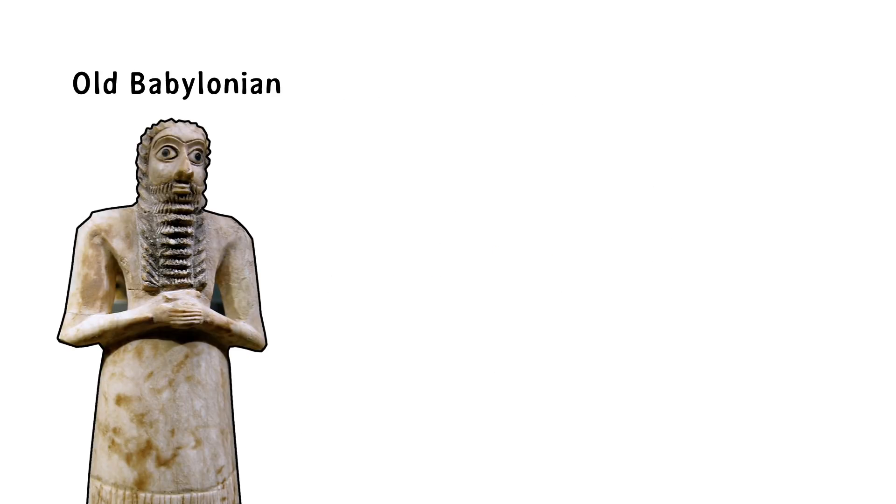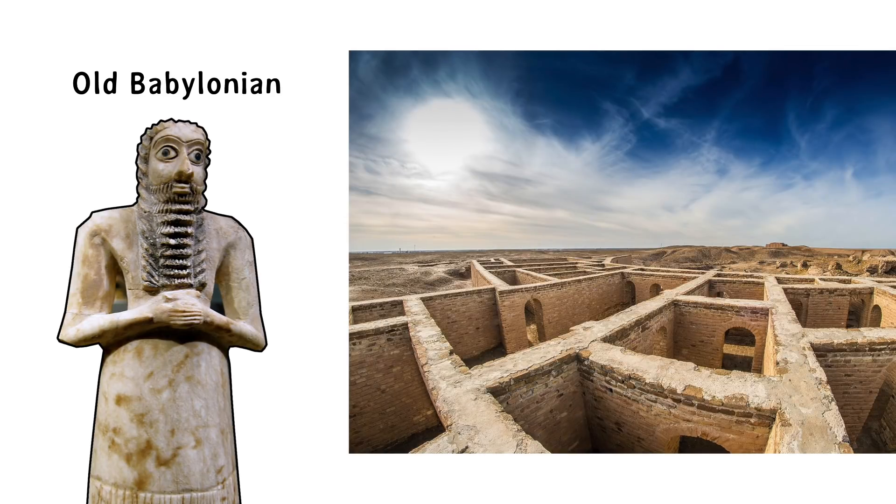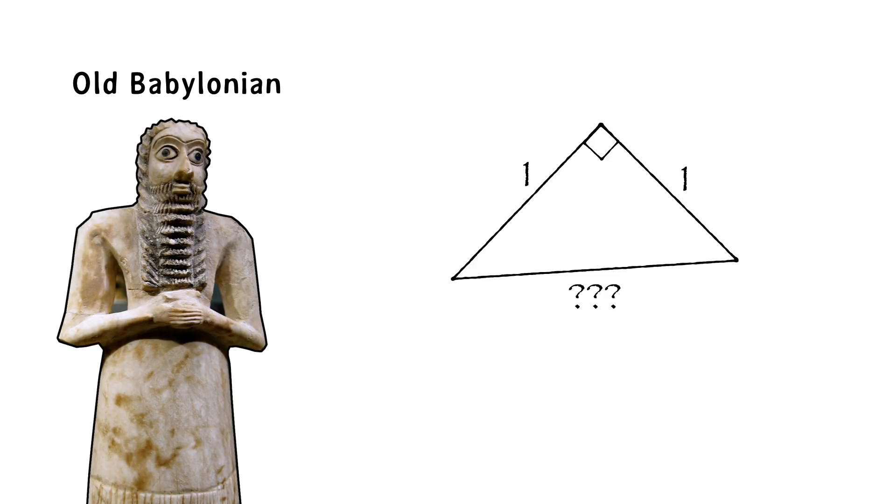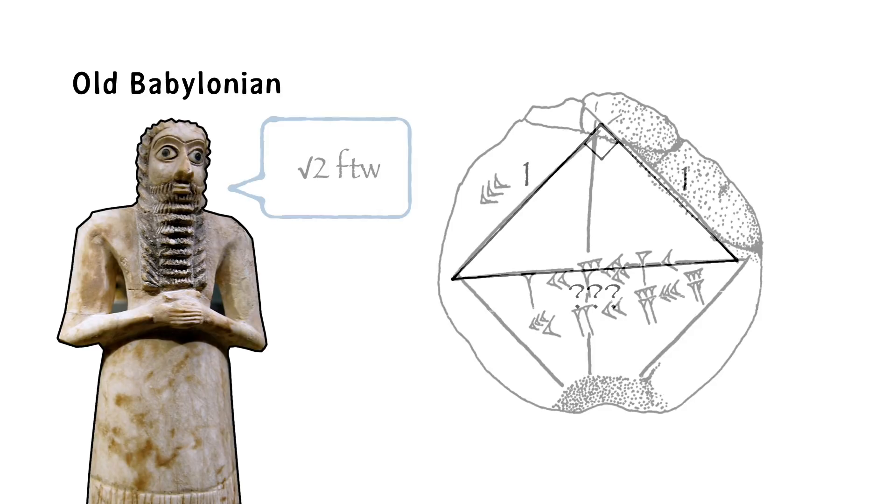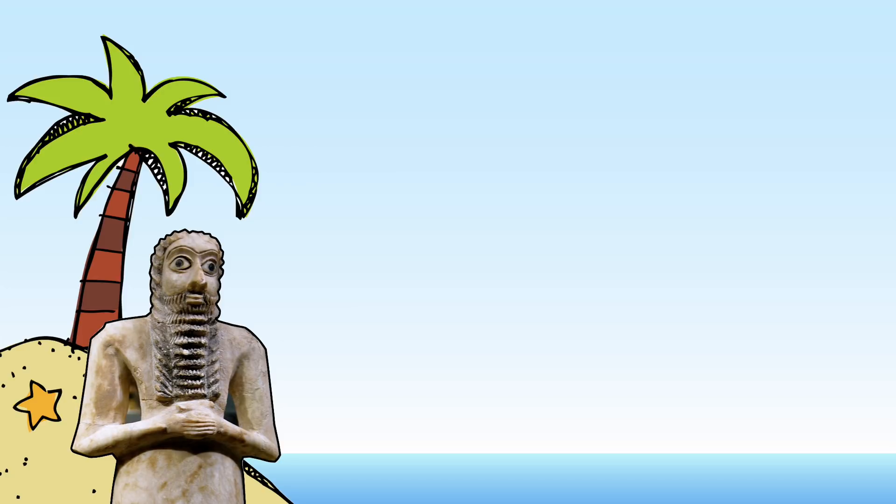Now, why would the old Babylonians need to know about square roots? Well, they were interested in calculating land areas and volumes of produce and architectural calculations, and they were pretty keen on astronomy too. And there's only so far you can get with integers and perfect squares. Eventually, you need things like square roots. So how would an ancient Babylonian go about calculating a square root?